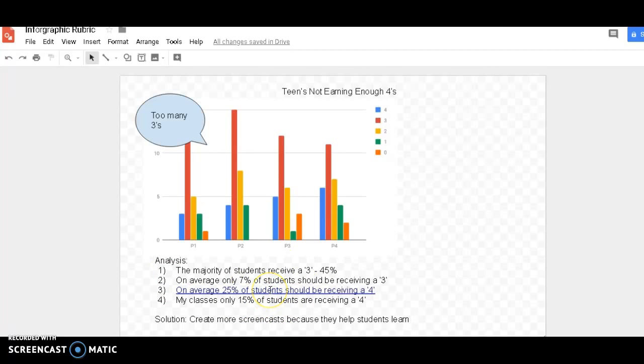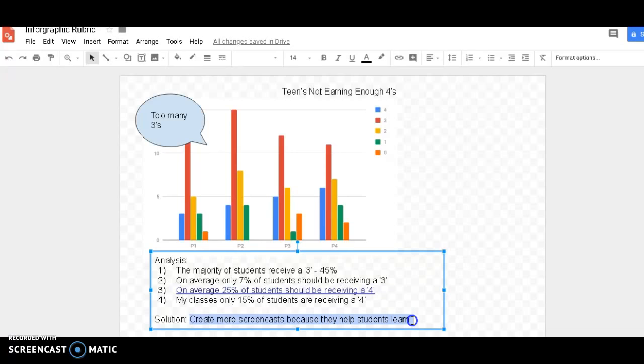What I did is I added links. So for on average, I added a link to the study where it showed what an average student should be doing. And I'm going to create a link to show,